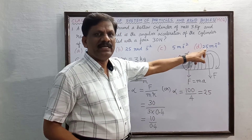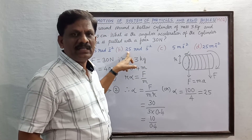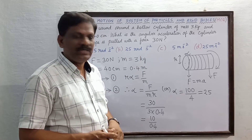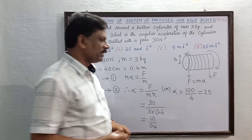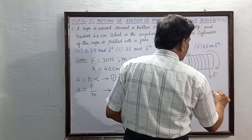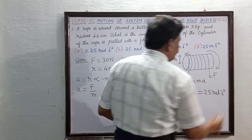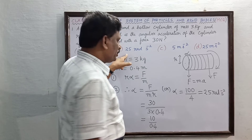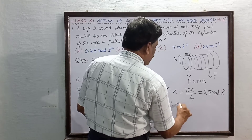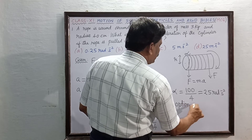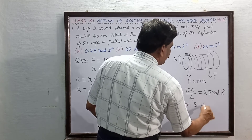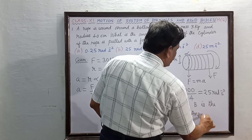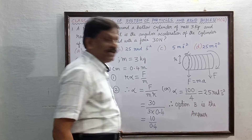The answer is 25 rad/s², which corresponds to option B. The unit for angular acceleration is radian per second squared. Therefore, option B is the correct answer. Have you all understood?